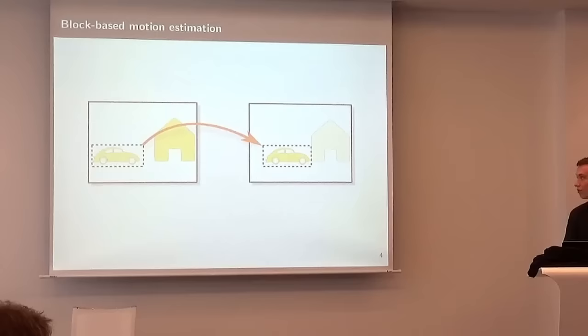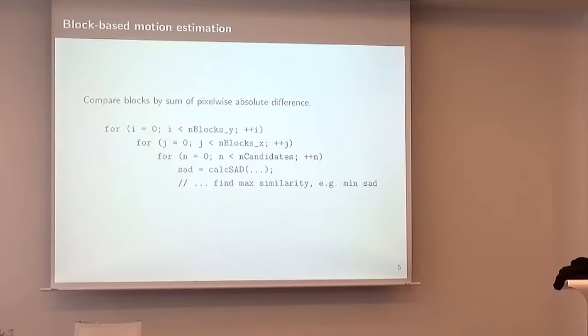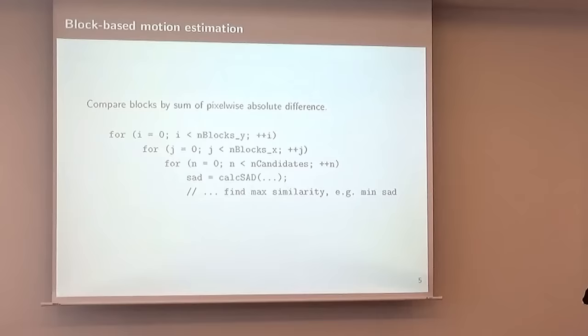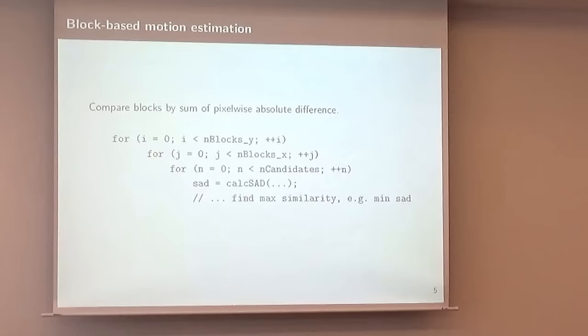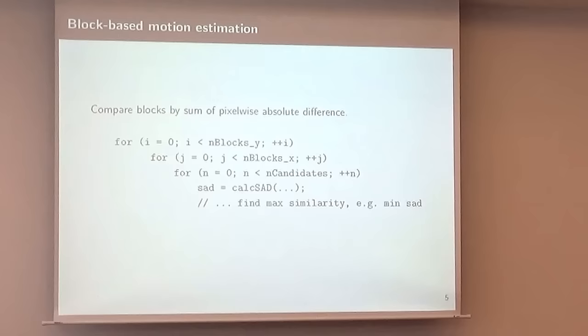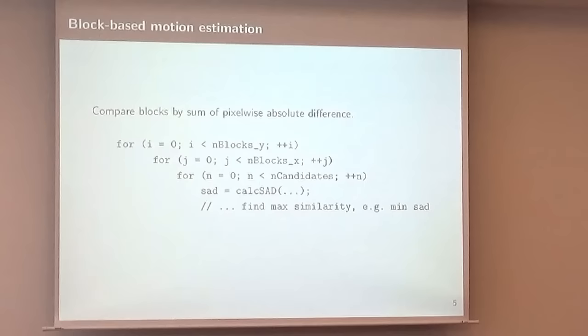You might want to write this in C style as a triple nested for loop where you loop over all blocks in horizontal and vertical direction. Then for every block, you have a set of candidate blocks you might want to examine to see which has the maximum similarity. It's quite common to use the sum of absolute differences to calculate the similarity. The sum of absolute differences is simply the accumulation of all pixel-wise absolute differences between these two blocks.